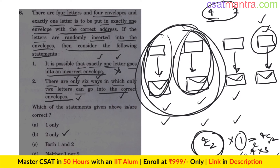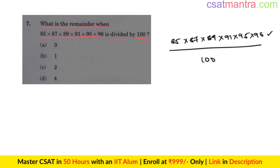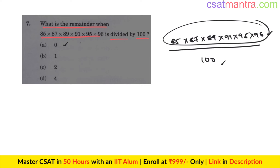Next question, based on number system: what is the remainder when this product is divided by 100? One of the options is 0. Always make use of options to arrive at the answer quickly. If we have 100 in the numerator, we can say this product is divisible by 100 and the remainder is 0. Note that 100 = 25 × 4.